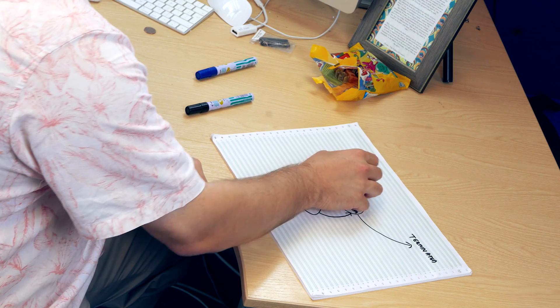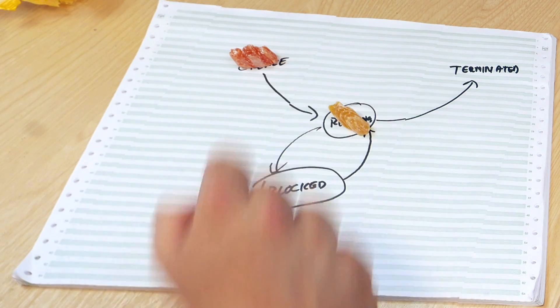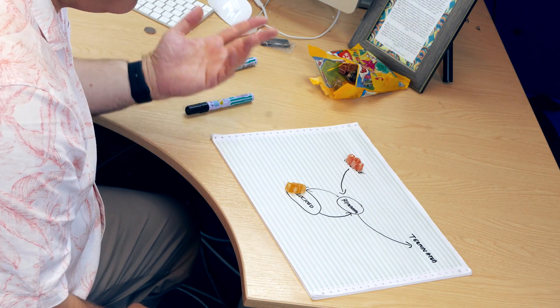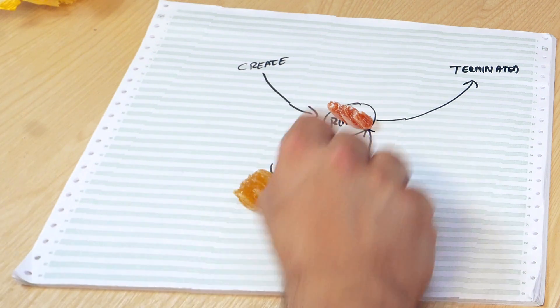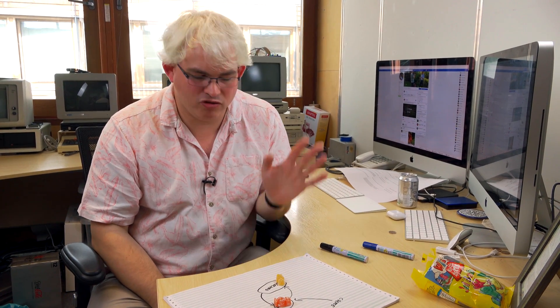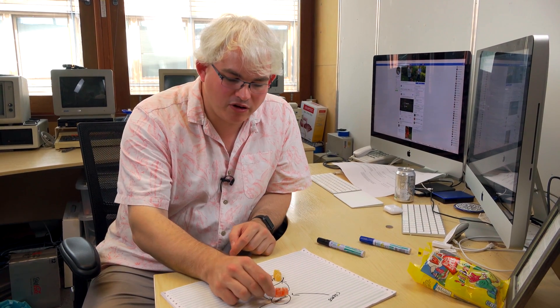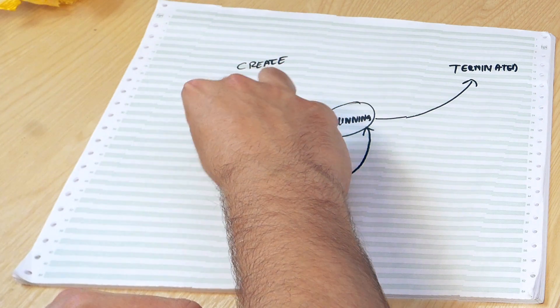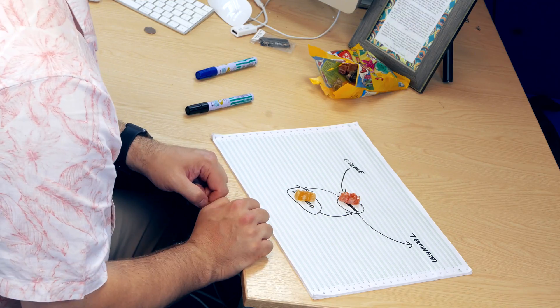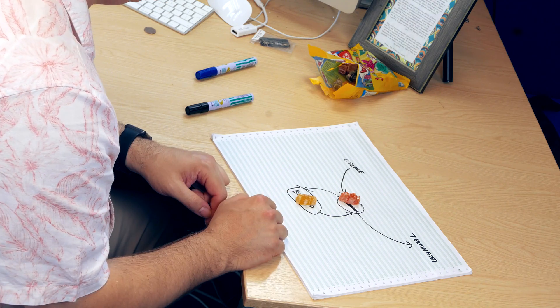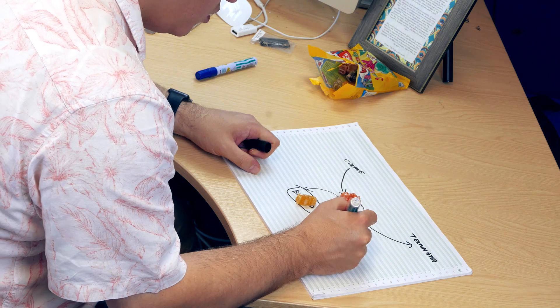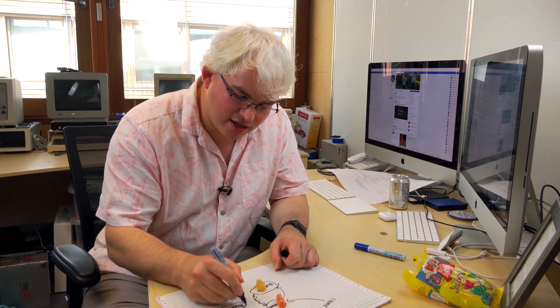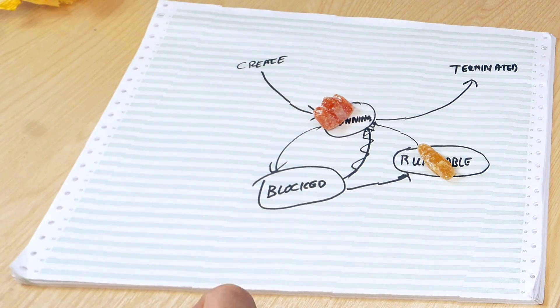We can start another process and see how we can model having more than one process in the operating system. We've got one process running, and we create another — obviously it can't run at the moment because the first process is running. Eventually the first process asks to print something, so it becomes blocked, and the OS can schedule the second process to run — say calculating pi to 500 decimal places. Now we get to a point where either the second process needs to print something and becomes blocked too, or the first process gets the key it was waiting for from the keyboard — at which point it's ready to run again. So we actually don't transition directly from blocked to running; we have a state called 'runnable' to keep track of processes that can run but can't run at the current time.